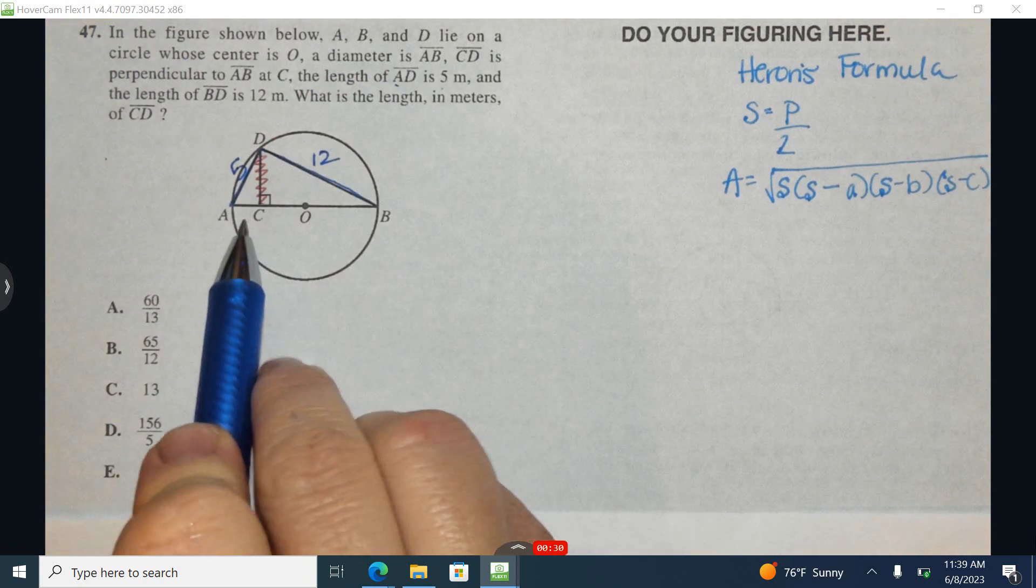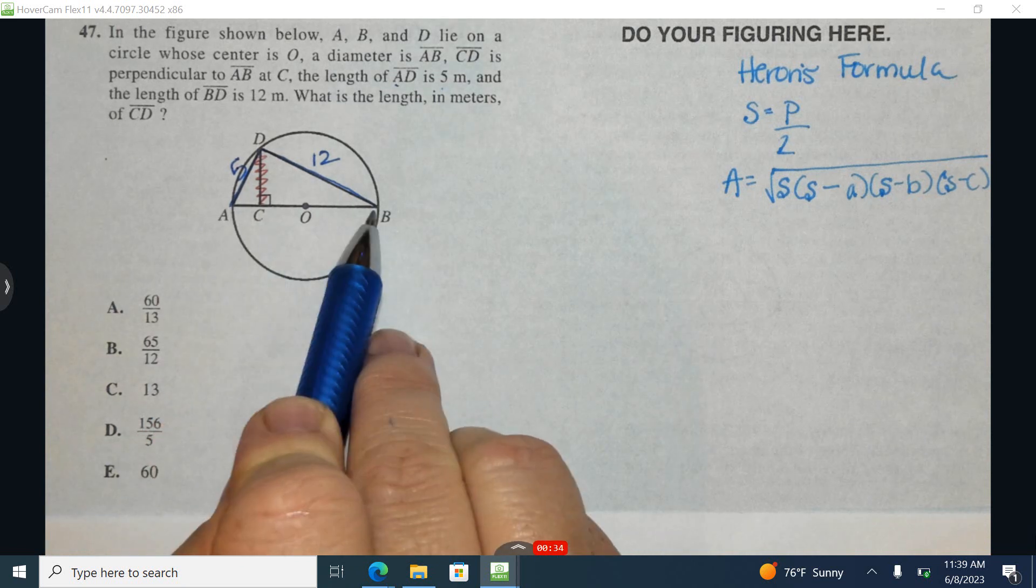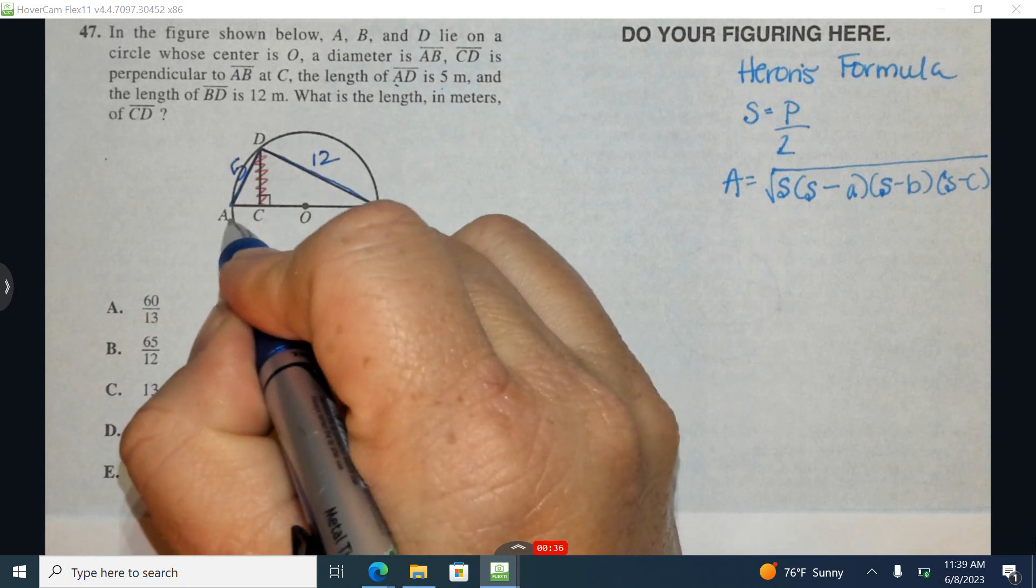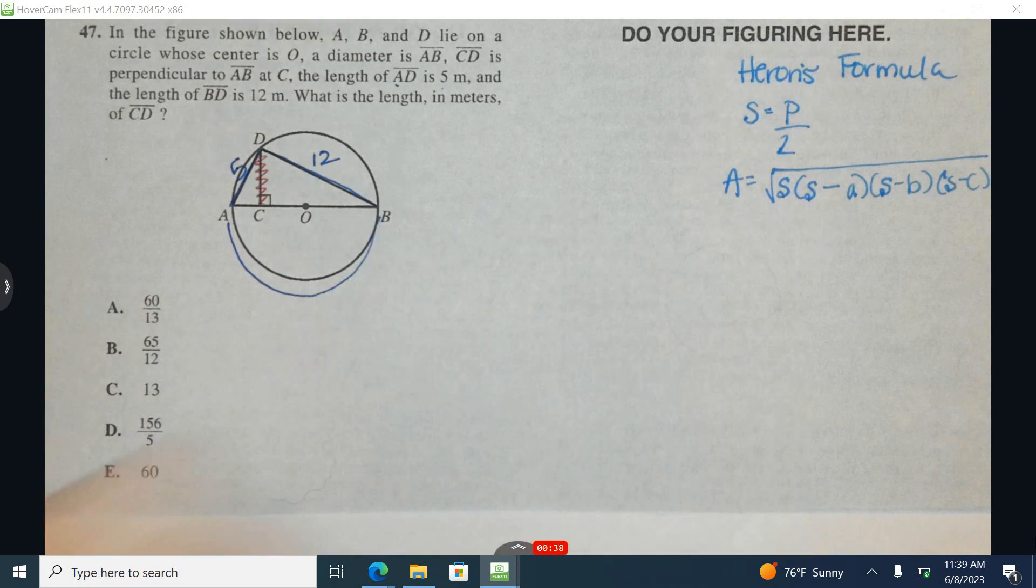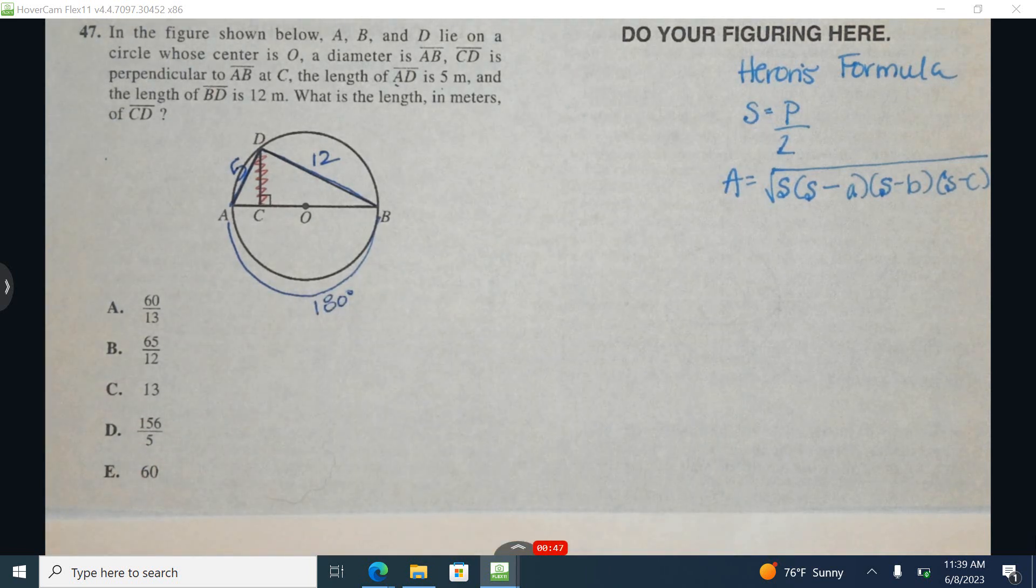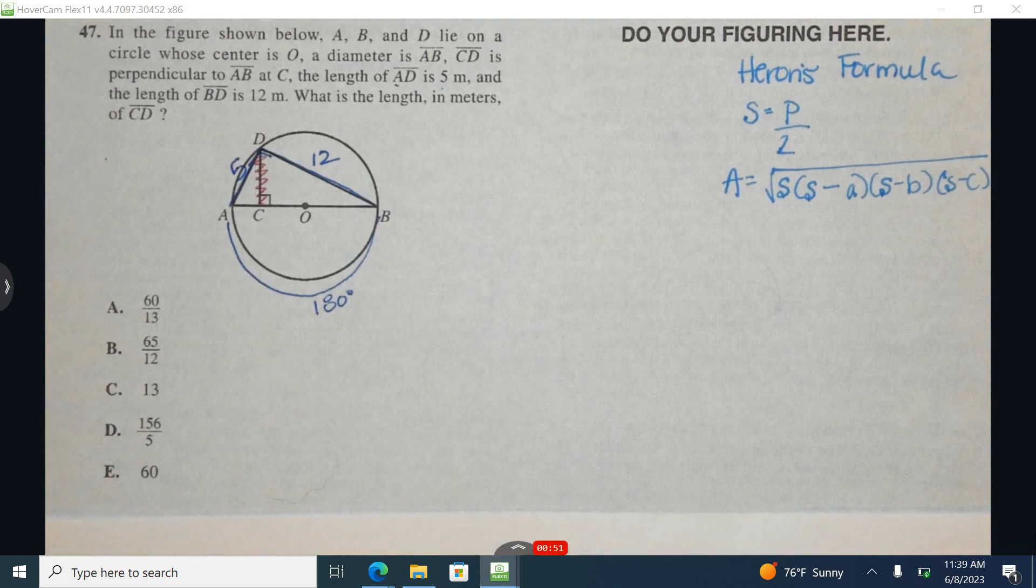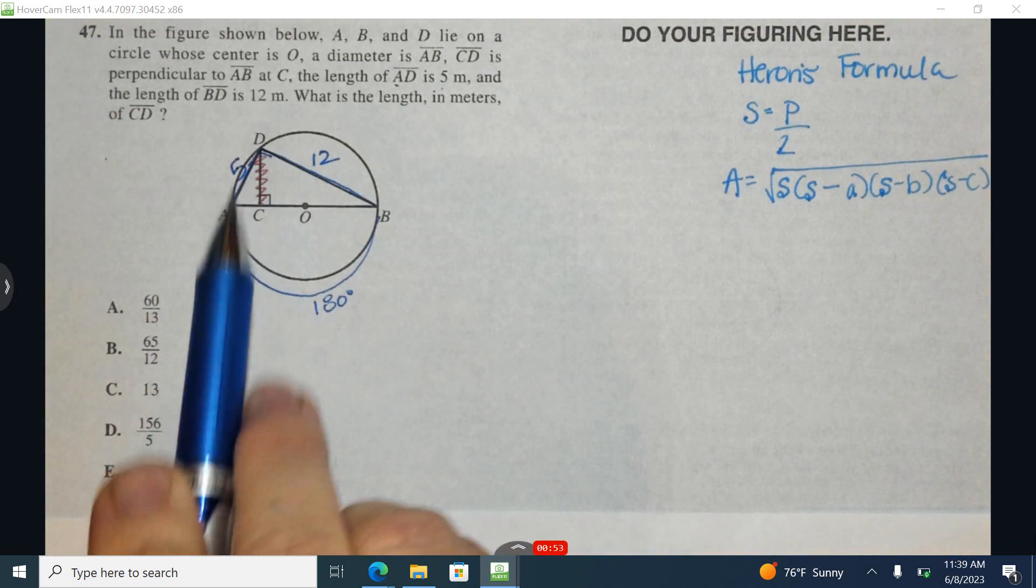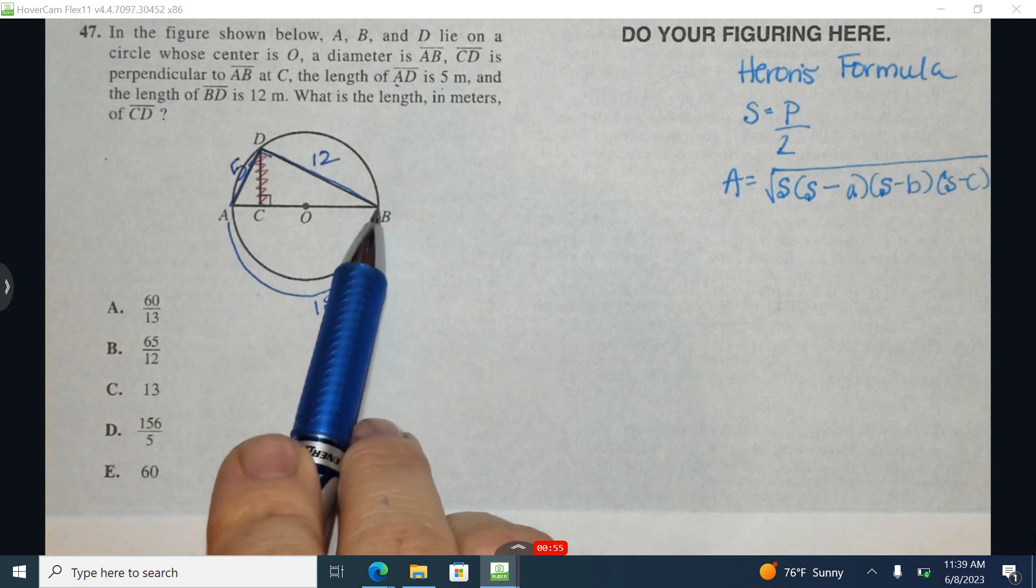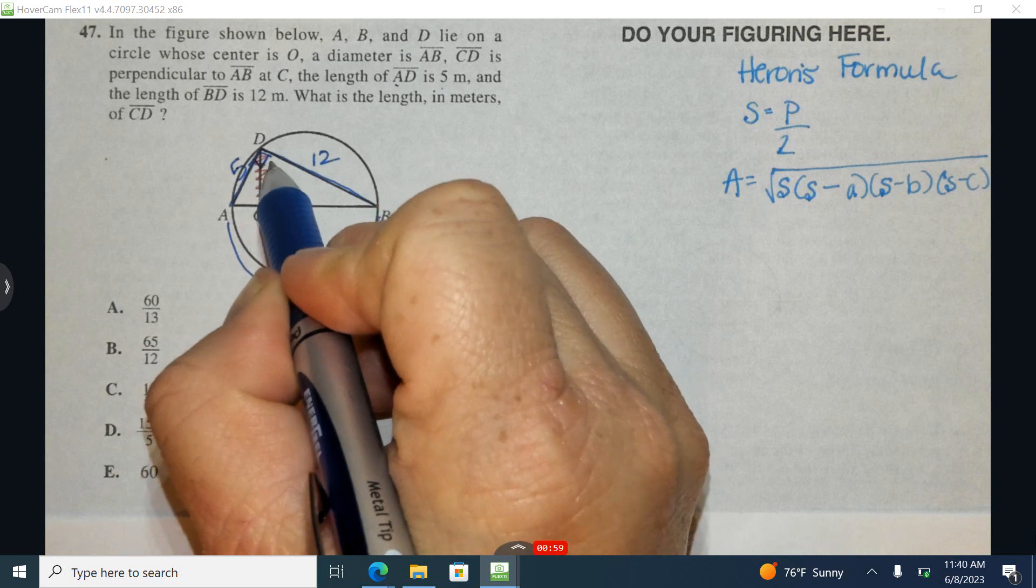Now we can see that we have a diameter here and it's cutting this circle in half. So this part of the circle is half of a circle. An entire circle is encompassed by 360 degrees. Half of 360 degrees is 180. Now how does that help us? This is an inscribed angle, and so from geometry, you know that an inscribed angle is half of the outside arc. So this angle right here is 90 degrees.